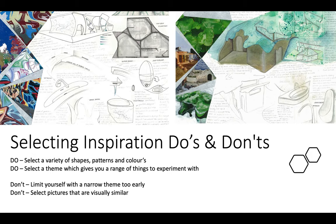As you're looking for images, you should select a variety of shapes, patterns, and colours, and select a theme which gives you a range of things to experiment with. This person here was looking at street art and all the different shapes found in graffiti, and you can see that in their concepts. And this person here was looking at more natural leaves and hillside dwellings as their market research, and you can see that reflected in their work.